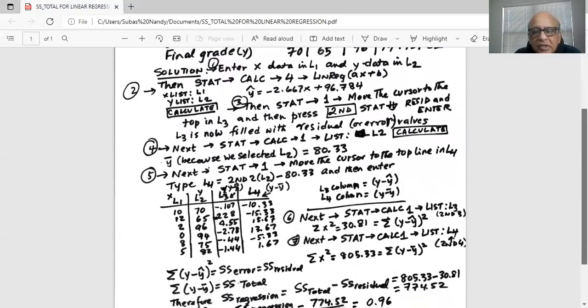Next step, we go STAT, CALC 1, list is L3, and we are interested in sum of x squared for L3, which is y minus y hat squared, or the error squared. After we get that, which is 30.81.